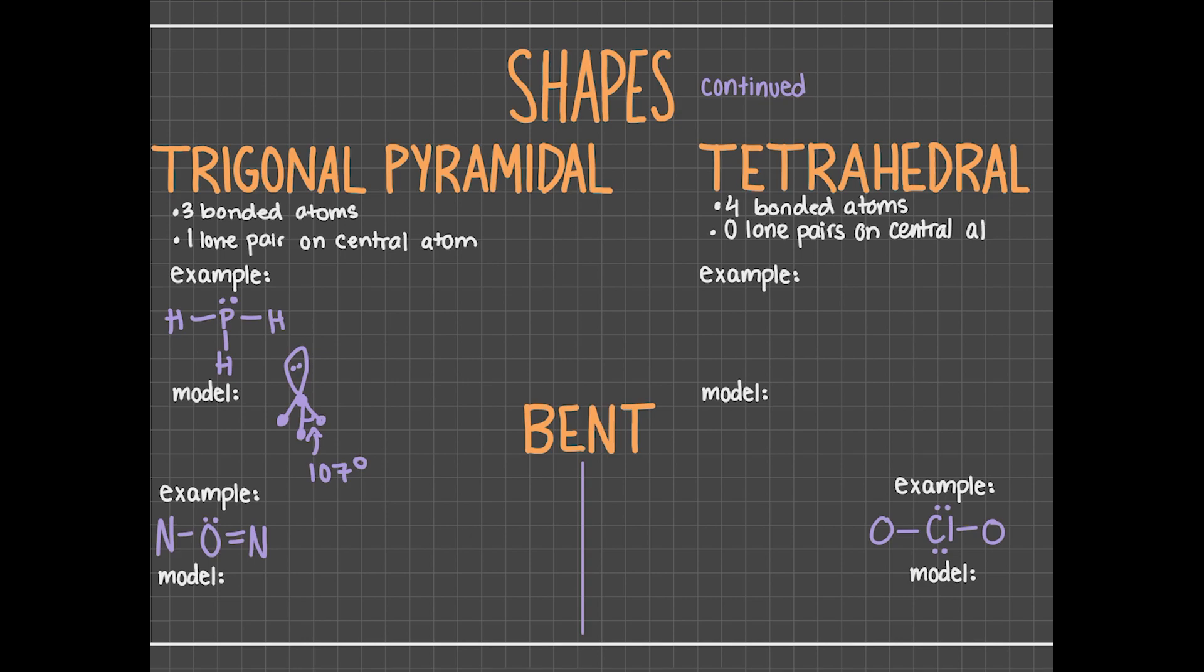Molecules can also be in the shape of a tetrahedral. Tetrahedrals have four atoms bonded to the central atom and no lone pairs on the central atom. CCl4 is a tetrahedral molecule as there are four chlorines bonded to the carbon and the carbon has no lone pairs on it. This is what the molecule looks like if we draw it out, and each bond angle will have a measure of about 109.5 degrees.